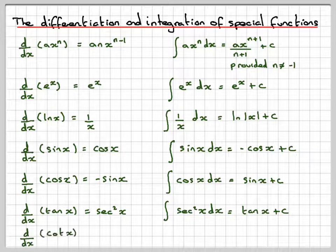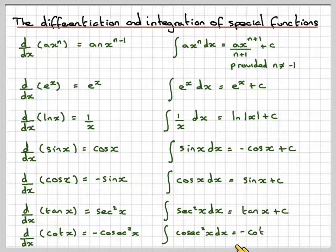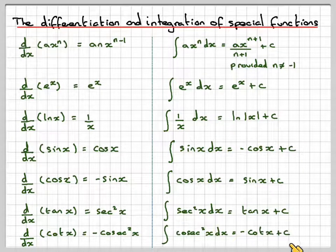d/dx of cot(x) is -cosec²(x). And therefore, if you want to integrate cosec²(x), you have to do -cot(x) + c. Notice the minus signs with that one.